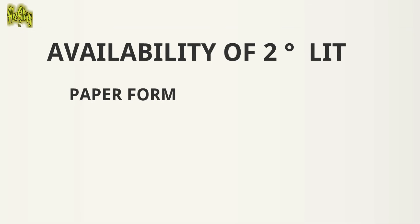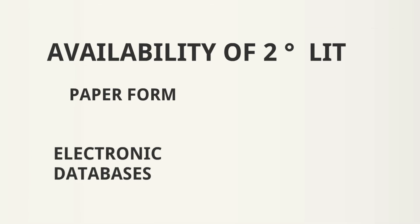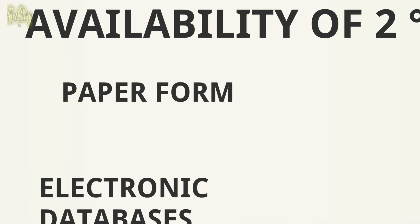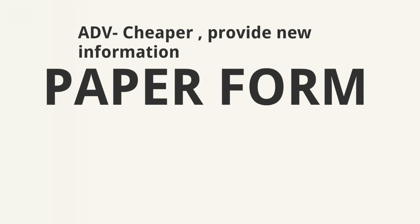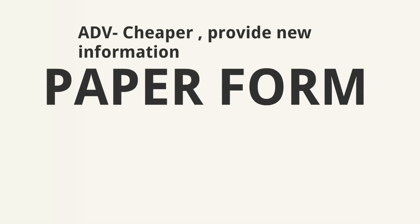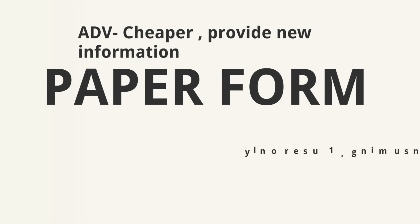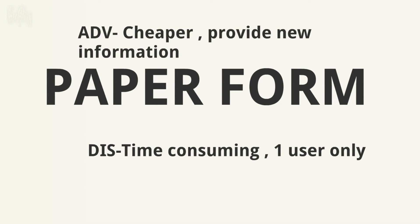Secondary literature is available in two forms: paper form and electronic databases. Paper form has the advantage of being cheaper since you don't need a computer. However, the disadvantage is that it is time-consuming to produce — imagine making one thousand copies — and paper form is usually for one user only.